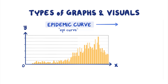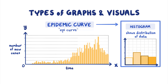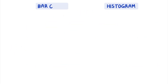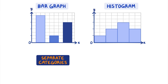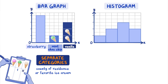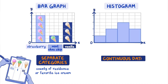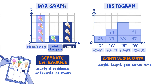An epi curve is a histogram that displays the number of new cases of disease over time. How is a histogram different from a bar graph? The bars in a histogram touch, but in a bar graph they usually do not. That is because the x-axis of a bar graph represents separate categories of data, such as county of residence or favorite ice cream flavor—categories that are distinct from one another. With a histogram, the x-axis represents continuous data, such as weight, height, quiz scores, or time. When displaying continuous data, you must select equal category ranges, such as percentage point intervals between 70–80%, 80–90%, and so on. Because each category of continuous data runs up to the next, the adjacent bars touch.